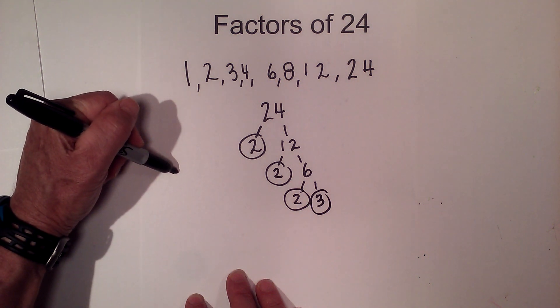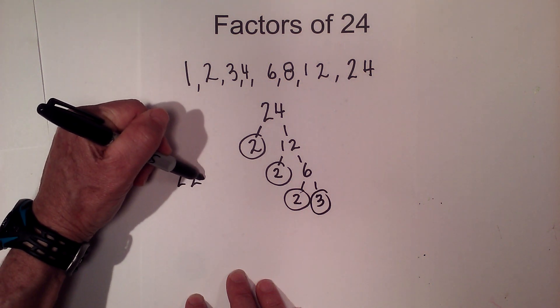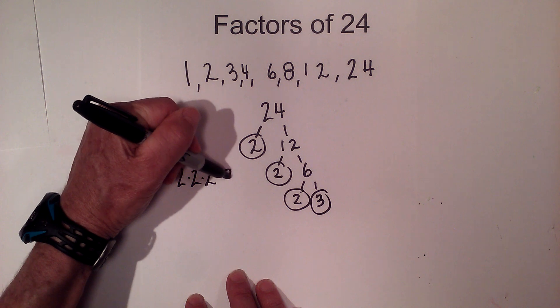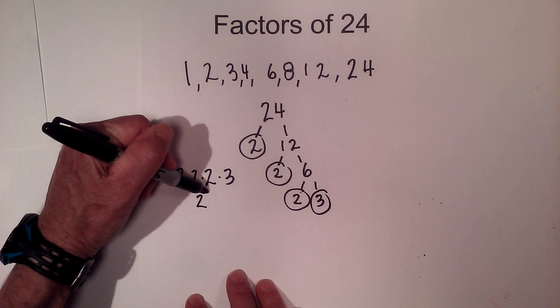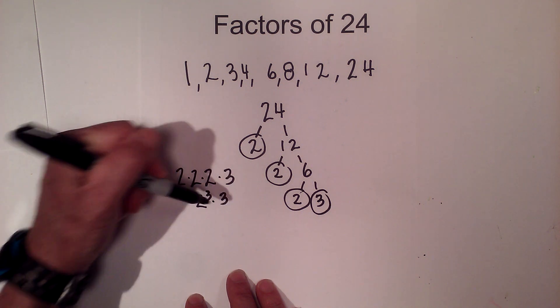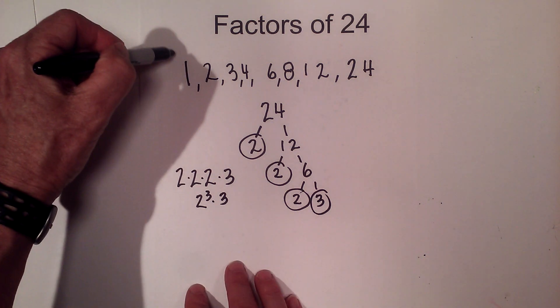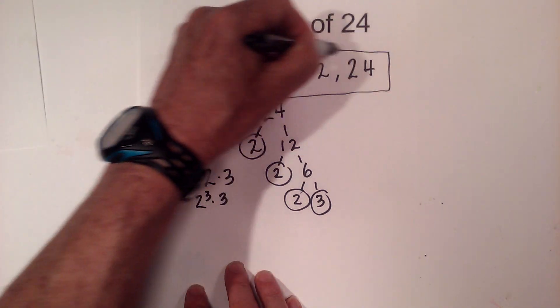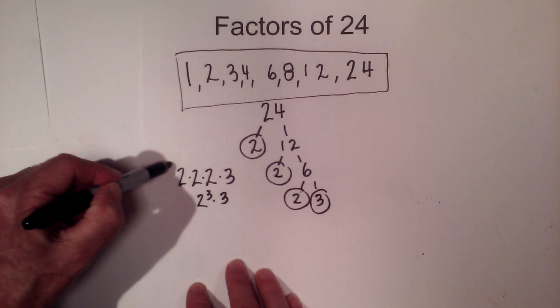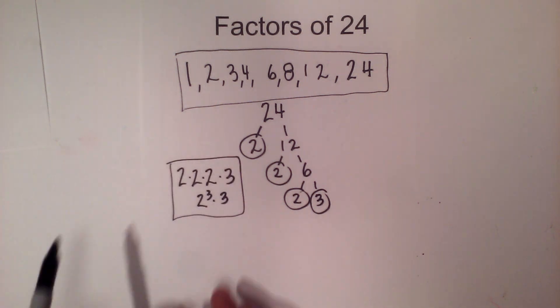So the prime factors of 24 are 2 times 2 times 2 times 3, or 2 cubed times 3. So there we go. Here are all the factors of 24 and here are the prime factors of 24.